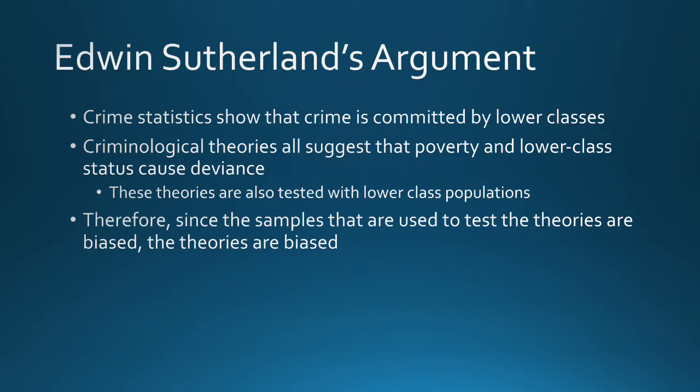What was Sutherland's main argument? Basically, he argued that crime statistics show that crime is committed by lower classes. Therefore, criminological theories all suggest that poverty and lower-class status caused this deviance. Because of that, these theories were also tested with lower-class populations. For those of you who have taken research methods, there should be all sorts of red flags going off in your mind here. If the crime statistics show crime is committed by lower-class people, we develop a theory saying lower-class status or poverty cause crime, and then test these theories using only lower-class populations.